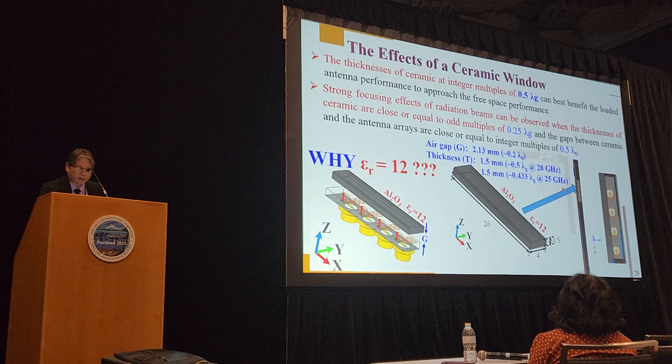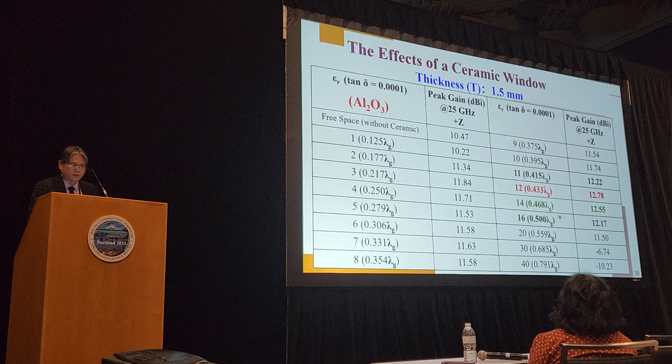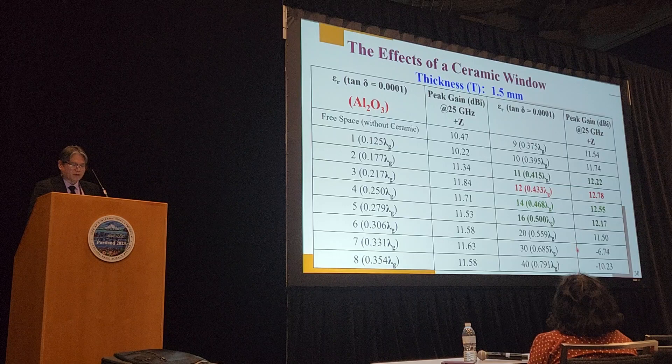At 25 GHz — one of our resonance frequencies — it is approximately 0.433 lambda g. From the table, as we slowly increase epsilon r and approach 0.5 lambda g, the gain begins to peak. When you increase up to about 20, 30, or 40, the gain begins to drop in the positive Z direction.